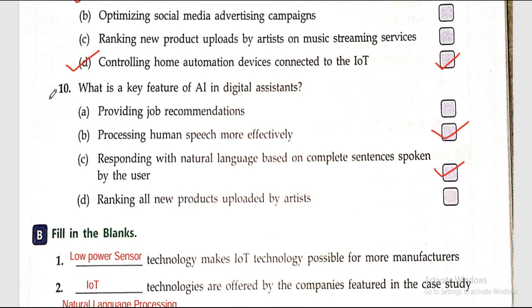Question ten: what is the key feature of AI in digital assistants? The accurate answers are processing human speech more effectively, and responding with natural language based on complete sentences spoken by the user.